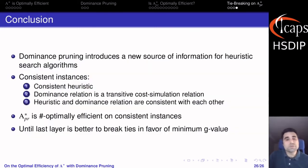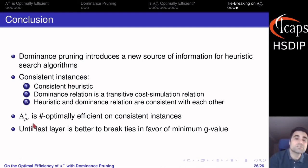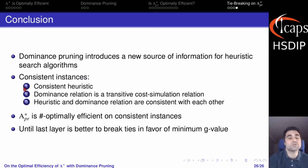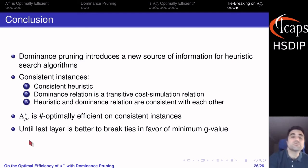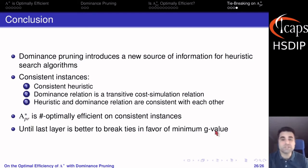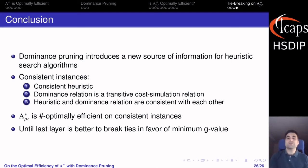In conclusion, we have introduced dominance pruning techniques as a new source of information for heuristic search algorithms, and we have shown that A-star with dominance pruning is still optimally efficient given some assumptions on the consistency of heuristics and dominance relations. We have also briefly discussed that until the last layer it's better to break ties in favor of minimum g value. With that I conclude, and I look forward to your questions.